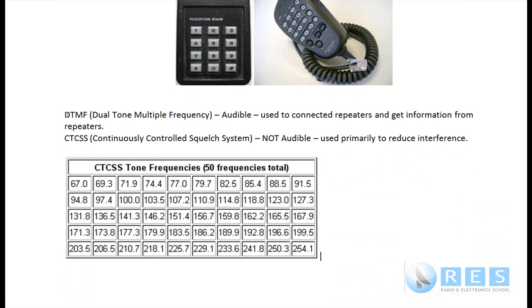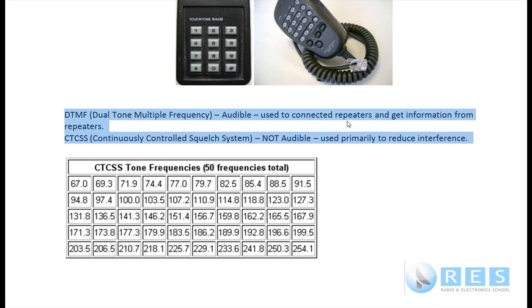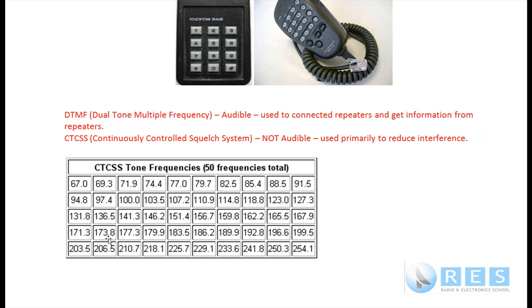I've done a summary of the two tones in writing. These are the CTCSS tones — you do not have to remember any of these frequencies. The highest CTCSS tone is 254.1 Hz, so you're not going to hear these; they're below our hearing range.